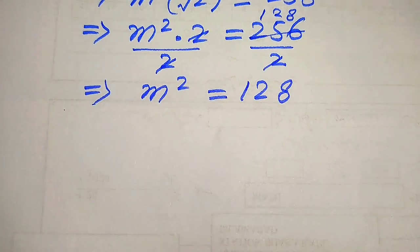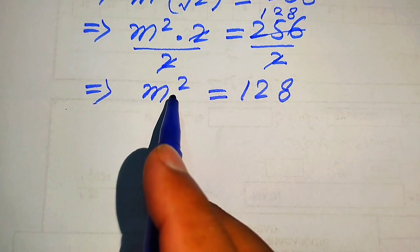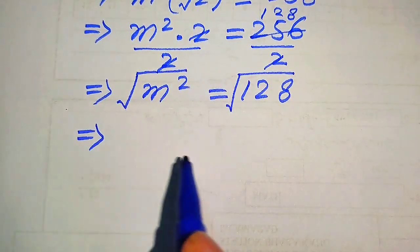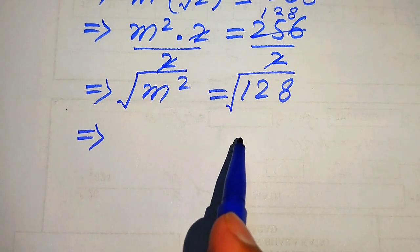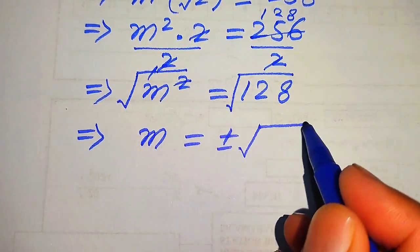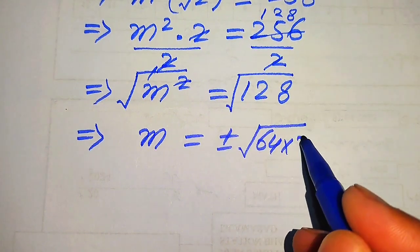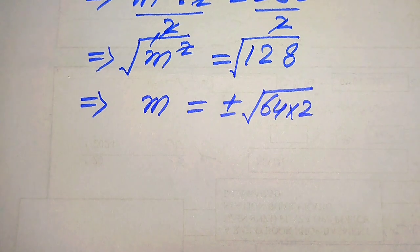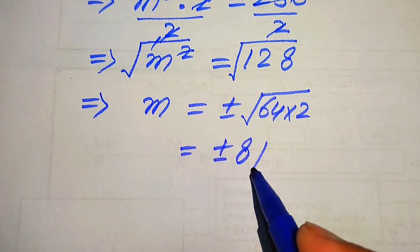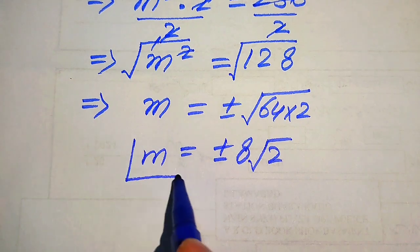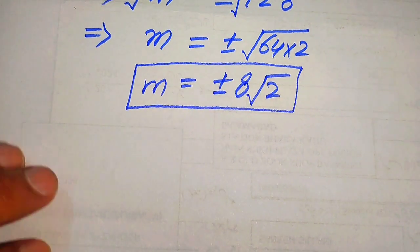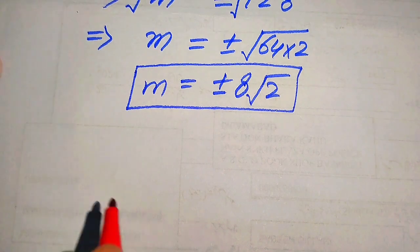Our target is to find the values of m, so we take a square root on both sides. When we take the square root on both sides we write plus or minus on one side. The square and square root cancel and we get m equals plus or minus the square root of 128. We break 128 as 64 times 2, and since square root of 64 equals 8, we get m equals plus or minus 8 times square root of 2. Now we need to verify which root is a solution and which is extraneous.